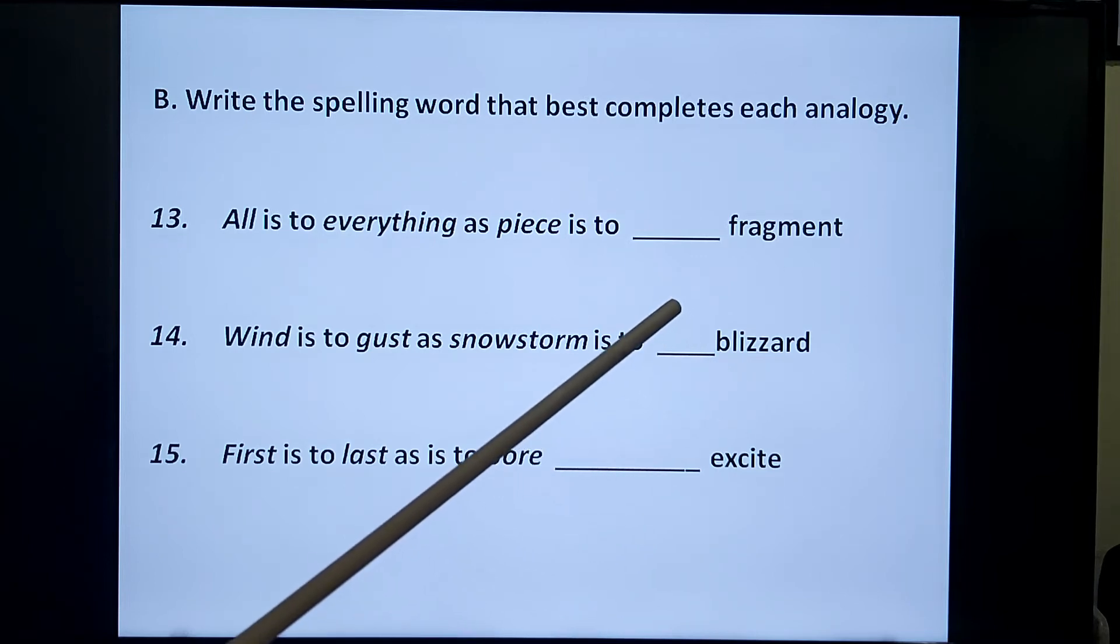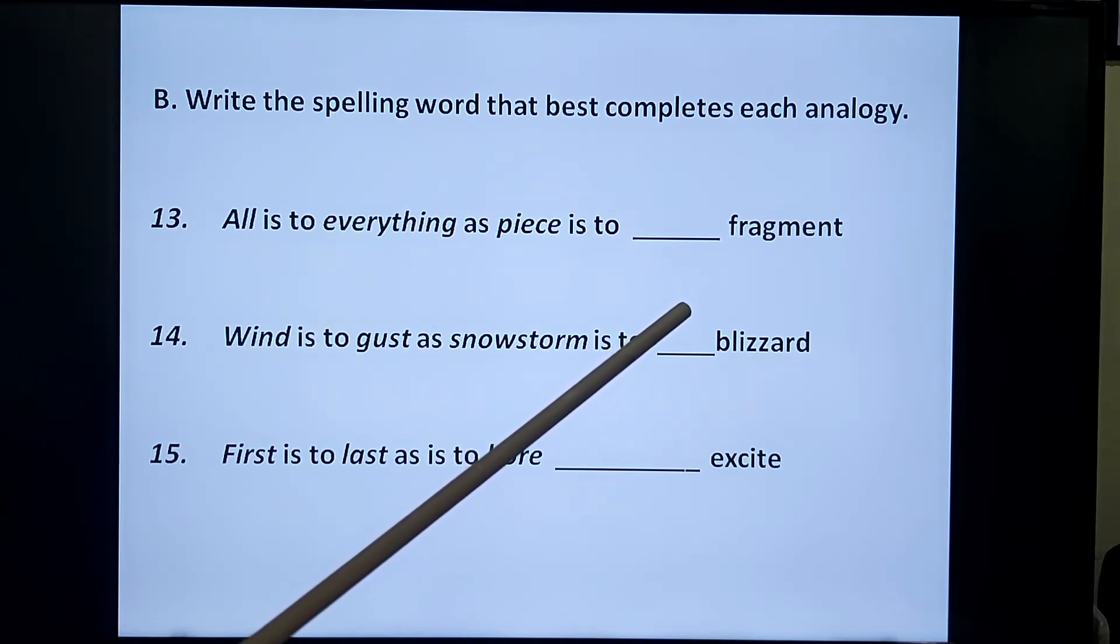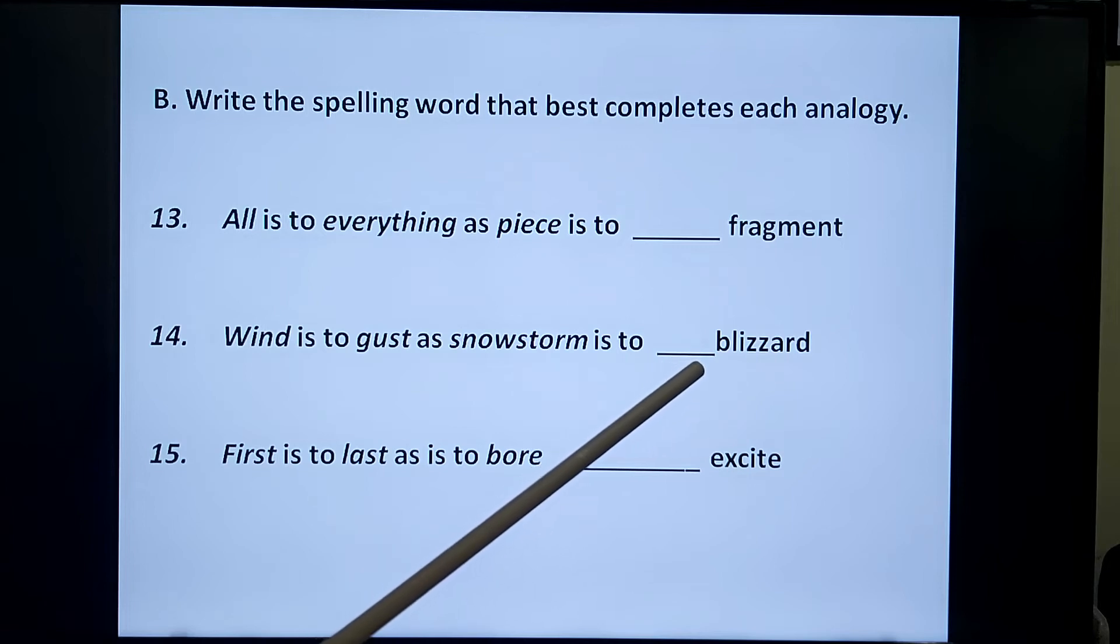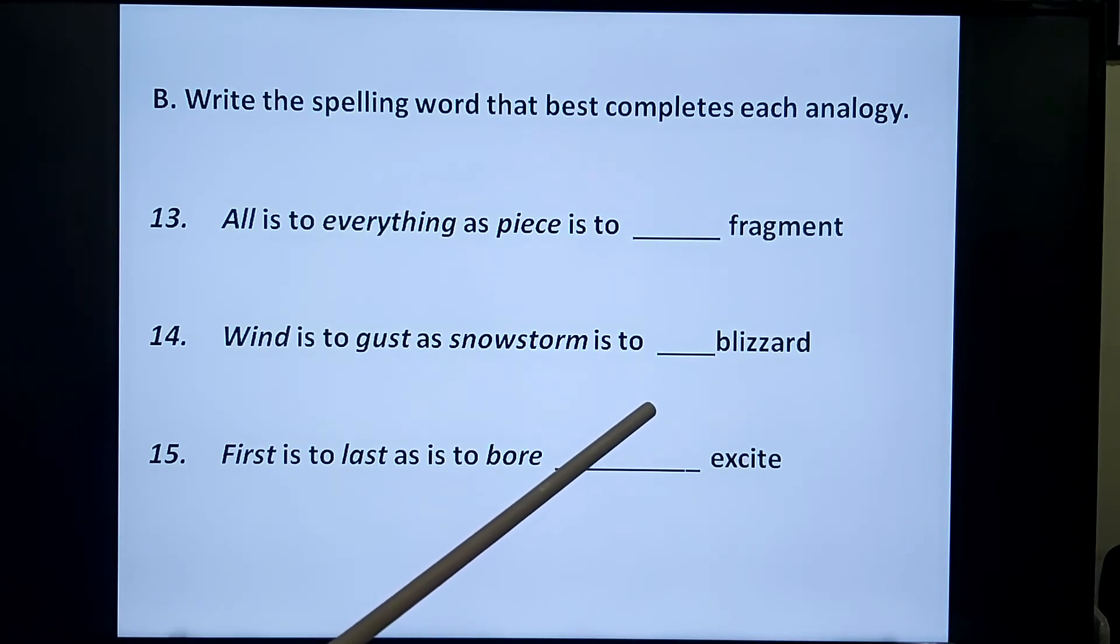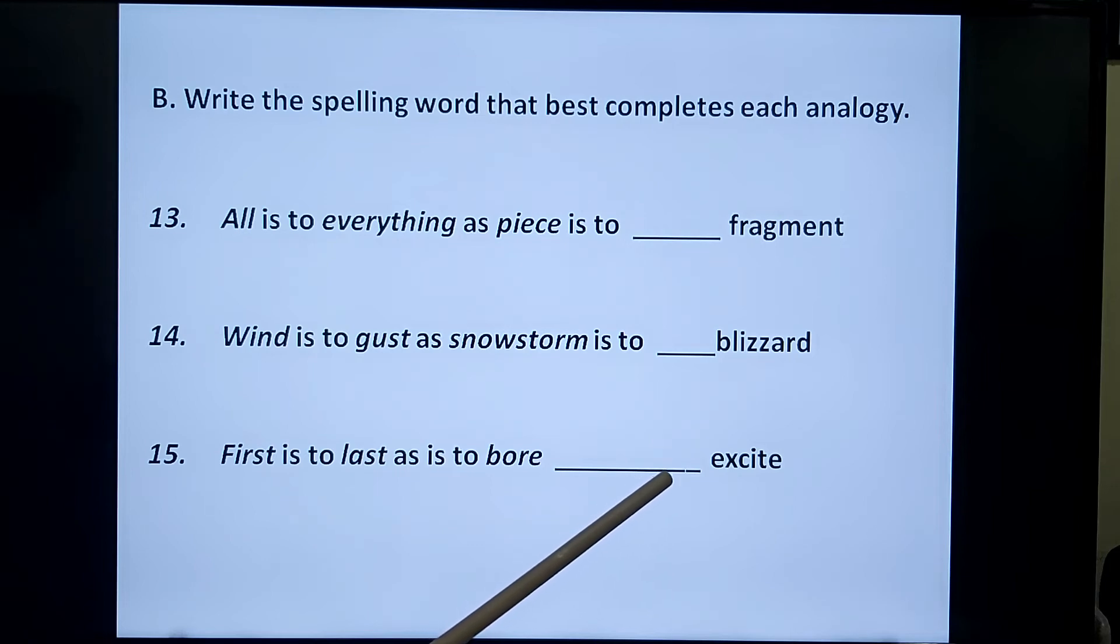Now come down to part B. Write the spelling word that best completes each analogy. Analogy is a kind of comparison that we have to put pieces together to make it meaningful and comprehensive. For thirteen we have: all is to everything as piece is to fragment. Fragment completes this analogy, F-R-A-G-M-E-N-T.